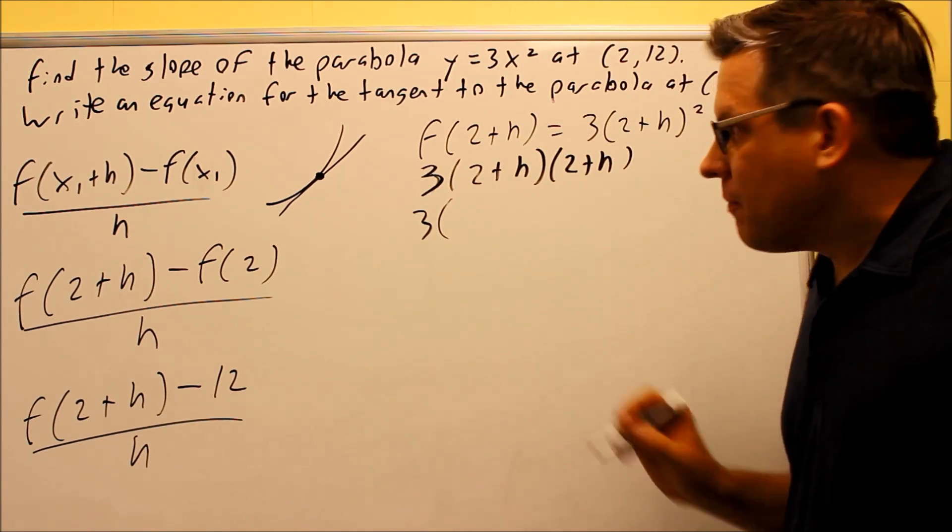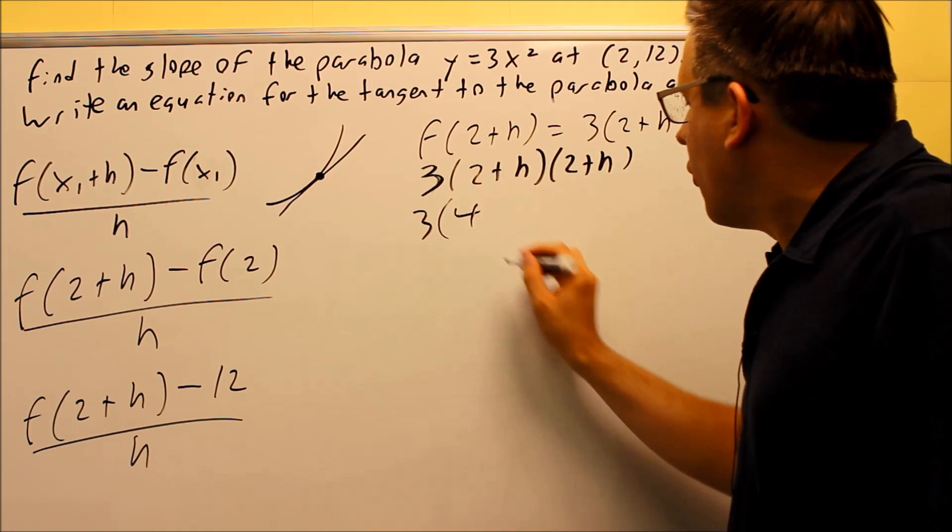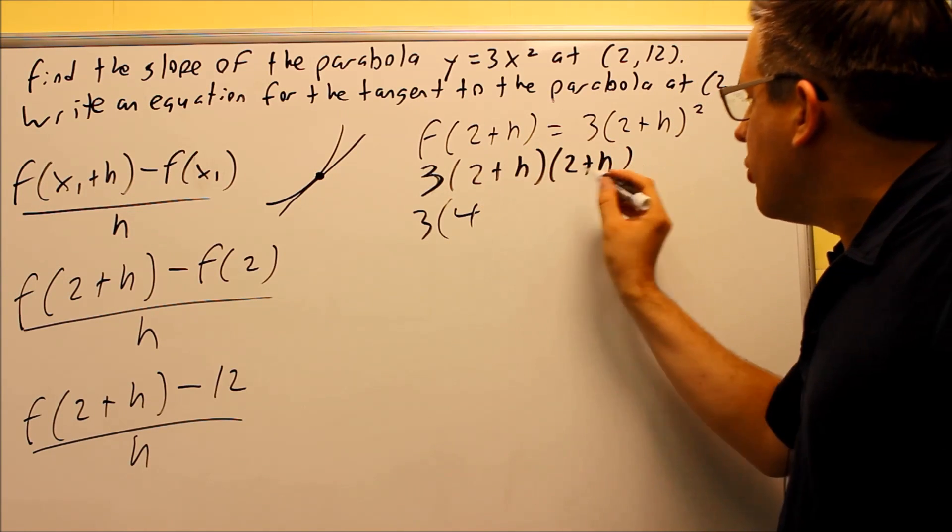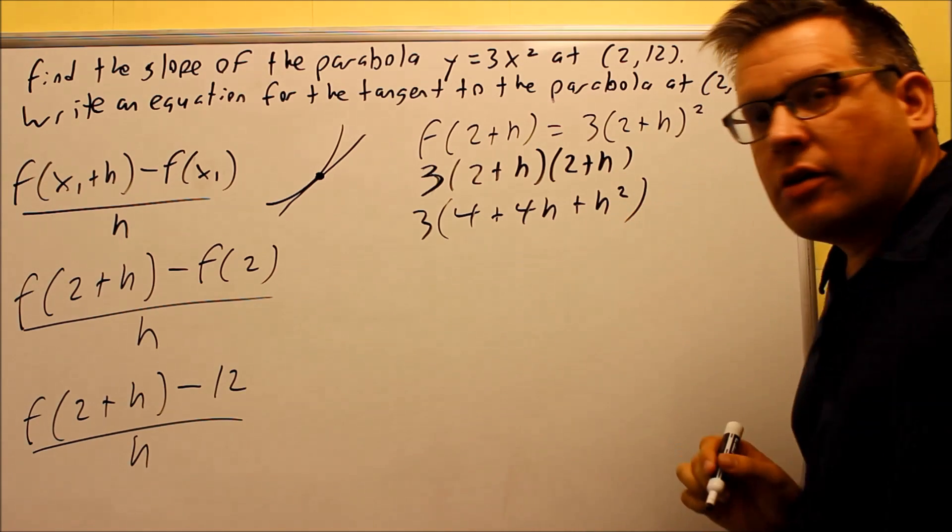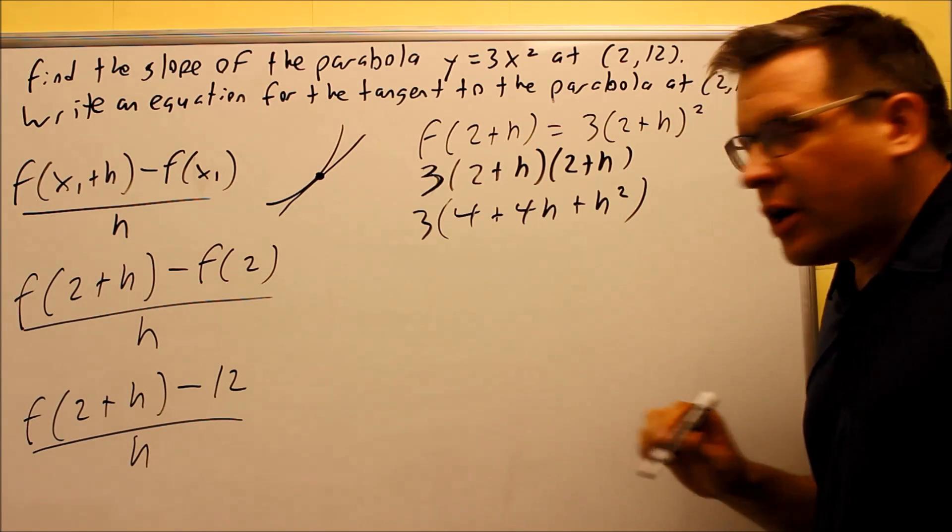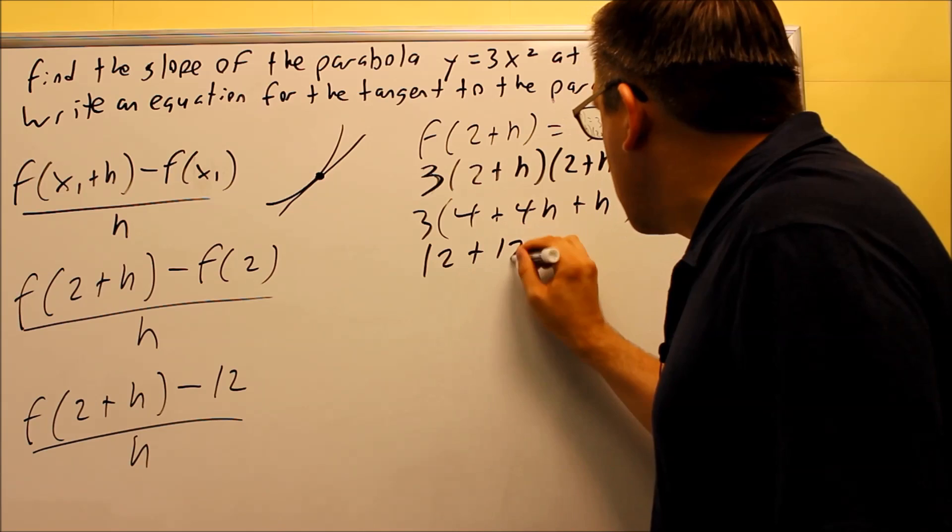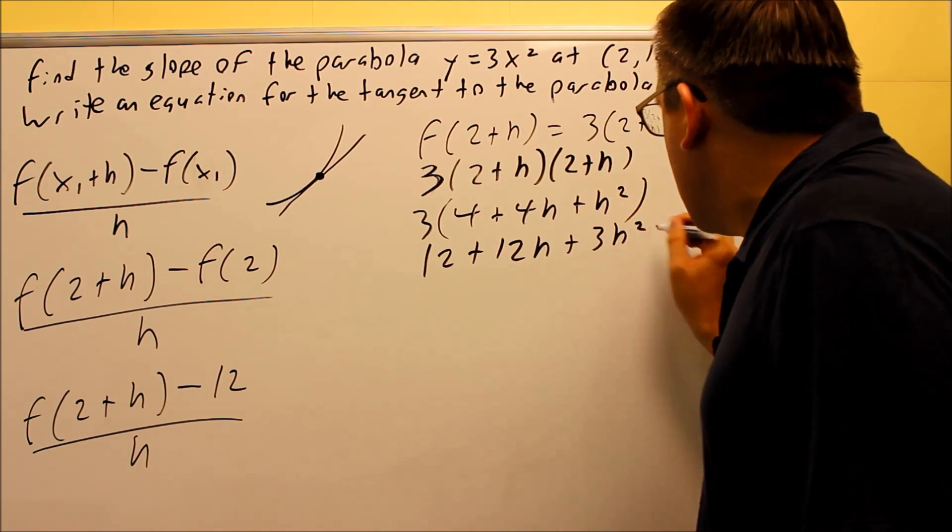So I'll leave the 3 on the outside for now. 2 times 2 is 4. I get 2h and 2h, that gives me 4h in the middle, and then plus h squared. Then I'll multiply it through by 3. I get 12 plus 12h plus 3h squared.